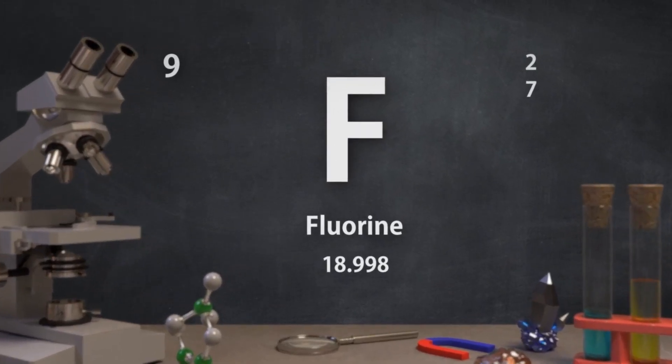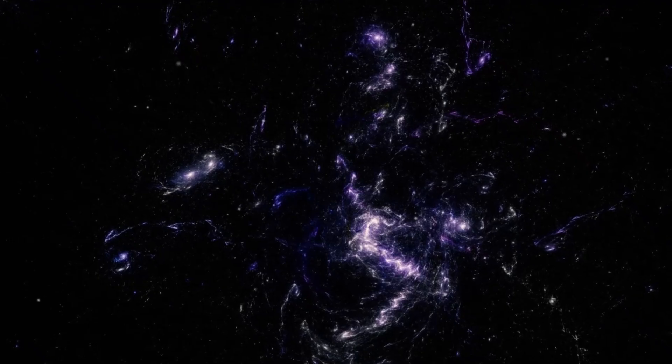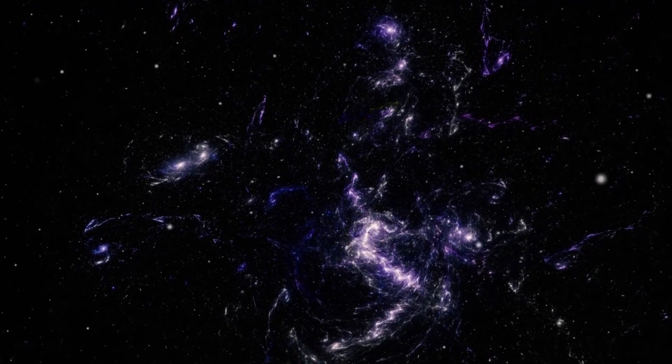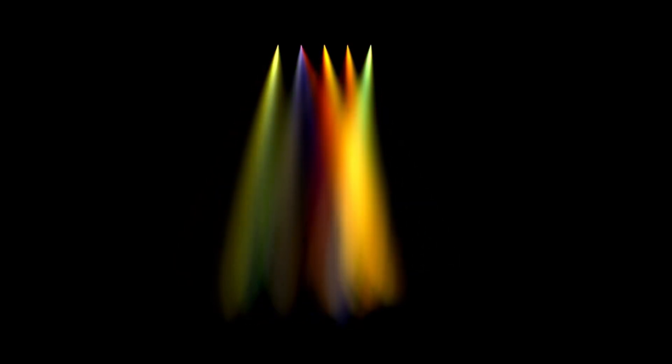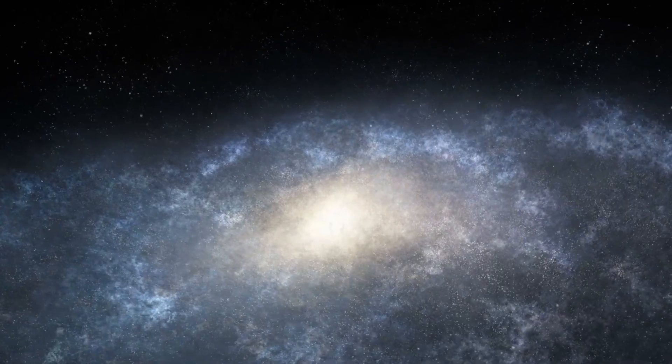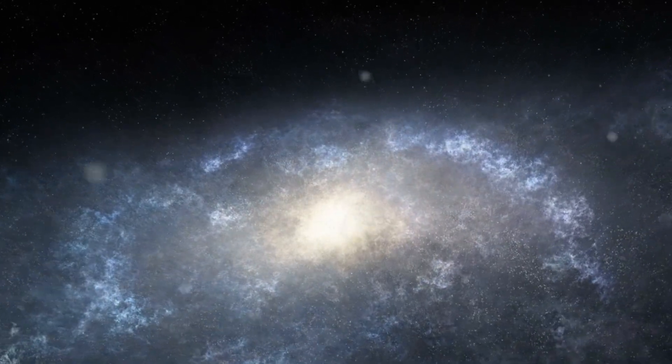To unravel this conundrum, we need to understand how we even calculate the age of the universe. The prevailing model begins with the Big Bang, that initial moment of explosive creation roughly 13.8 billion years ago, which sent all matter and energy hurtling outward into what would become the cosmos. By observing the light from distant galaxies, specifically, how this light is stretched toward the red end of the spectrum, a phenomenon known as redshift, astronomers have been able to determine how fast the universe is expanding and, from there, estimate its age.